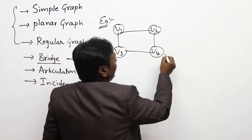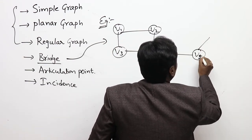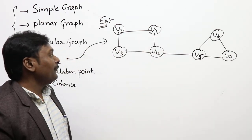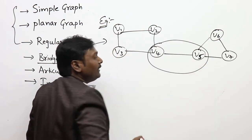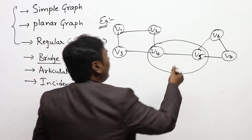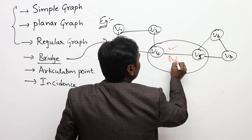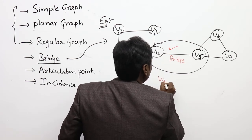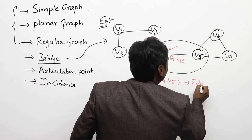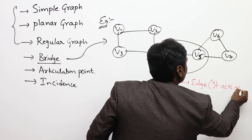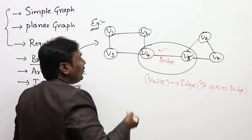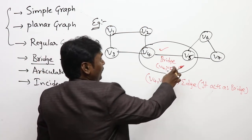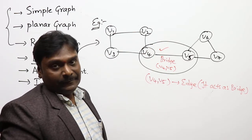For a bridge example, consider a graph G with vertices including v5, v6, v7. The edge (v4, v5) acts as a bridge. If you remove this edge (v4, v5), the graph automatically becomes disconnected and two separate graphs are created — that is why it is called a bridge.